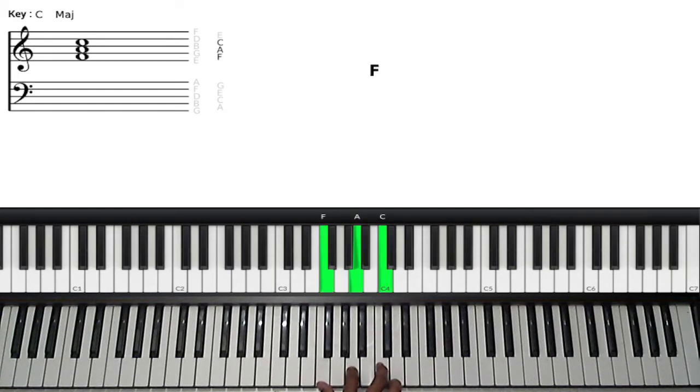Alright, so this is the G major chord. Let's find G. It doesn't matter where we could play it. So G, we take its major third and its fifth, which is D.